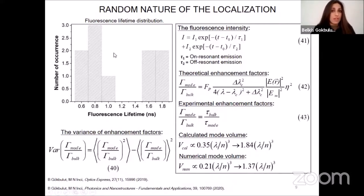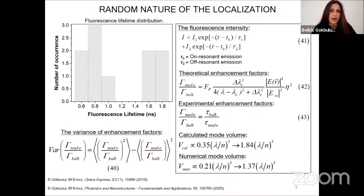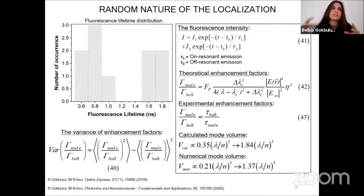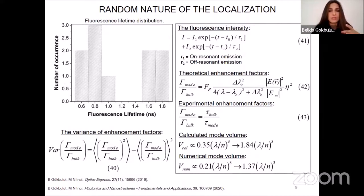This figure shows the fluorescence lifetime distribution of the emitters coupled into the specific Anderson localized modes in the wedge waveguide structure. The spontaneous emission rate enhancement factors of the emitters coupled into quasi-optical modes are calculated to be changing from 2 to 7 according to our experimental results. The variance of the enhancement factors is also calculated to characterize the random nature of the light localization in the entirely two-dimensional disordered waveguide medium, which is equal to 2.5 according to our experimental results. This value is comparable with the previously reported variance values of the Purcell factors for Anderson localized modes generated inside disordered photonic crystal waveguide structures. The total fluorescence originates from both on-resonant and off-resonant emission, where the on-resonant emission is attributed to the fastest decay rate in the total PL, corresponding to the emitters coupled into specific Anderson localized cavities in the waveguide medium.